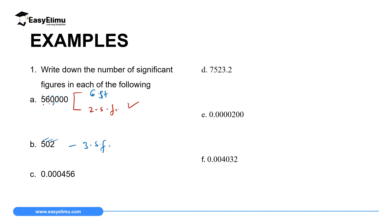Number D: 7523.2. In this case, all the digits are significant — 7 is the first, 5 is the second, 2 is the third, 3 is the fourth, and 2 is the fifth. So this number has five significant figures.